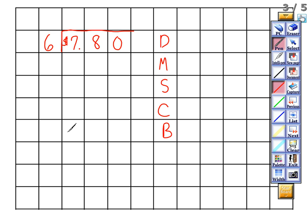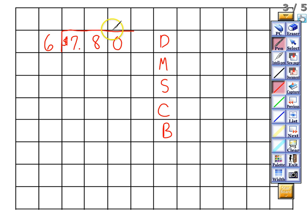Whenever you divide with money, the only thing that is different is that you have a dollar sign and a decimal point. Everything else is the exact same. The steps — divide, multiply, subtract, check, bring down — are all the same. The dividend goes inside the division house and the divisor is right outside.